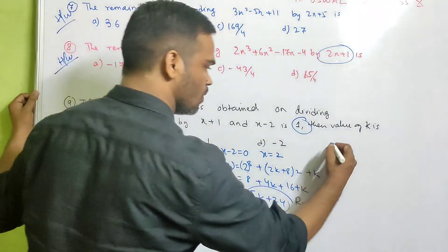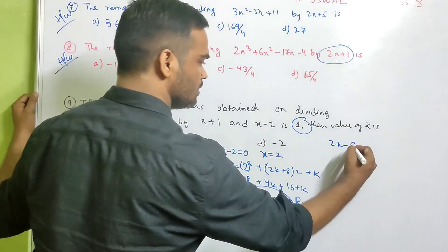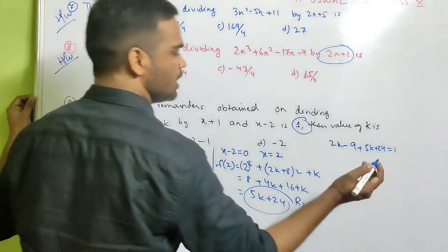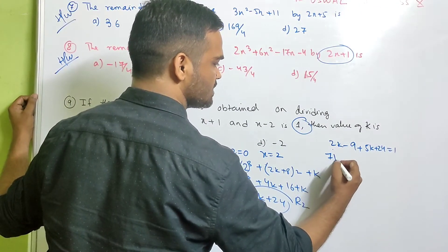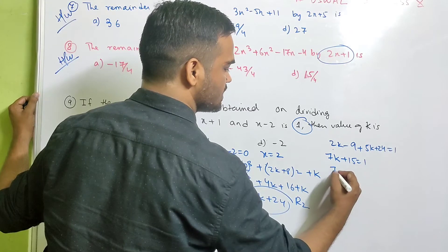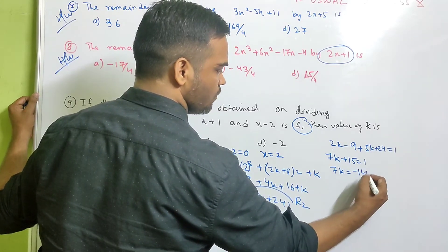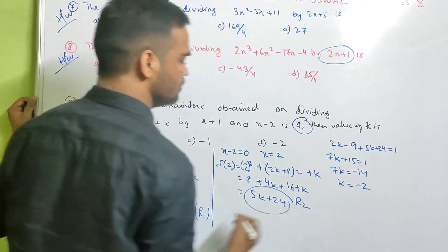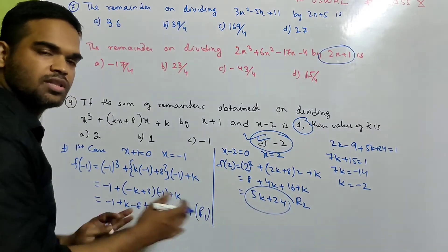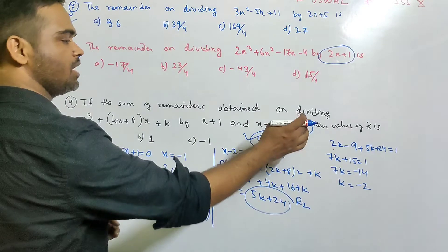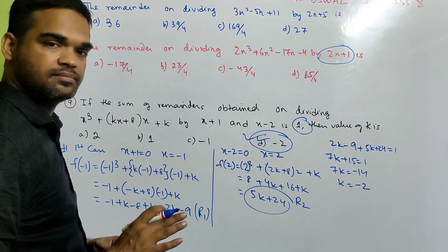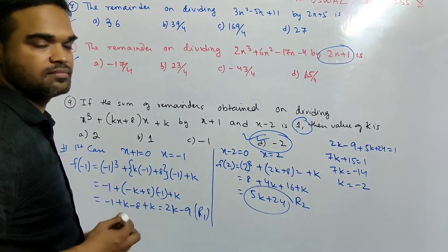Now according to the problem, when you add the two, you are getting 1. Which means can I write 2k minus 9 plus 5k plus 24 is equal to 1. r1 plus r2 equals to 1. Then 2k plus 5k is 7k. Minus 9 plus 24 is 15. So plus 15 equals to 1. And it is 7k equals to 1 minus 15 is minus 14. So k equals to minus 2. So d is your correct option. k equals to minus 2. Both the cases, we got the remainder. And it was given in the sum. You will get 1. Add the 2 remainder. Equate to 1. We will get the answer. Done?